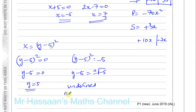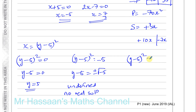If (y minus 5) squared equals 7 over 2, then y minus 5 equals plus or minus the square root of 7 over 2, so y equals 5 plus or minus the square root of 7 over 2.